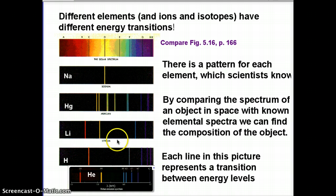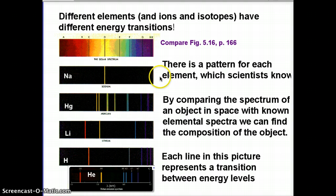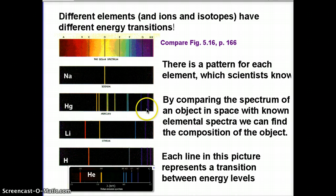By looking at these, we can compare them against the Sun or some other object in astronomy. Any professional astronomer would be able to recognize which pattern they're seeing. They would know that this is what sodium looks like, this is what mercury looks like, or this is what hydrogen looks like. And if you don't know it off the top of your head, there are plenty of books that will show it to you.